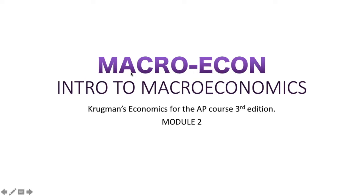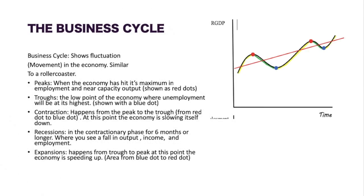The first topic we're going to talk about is the business cycle. We can see here that the business cycle fluctuates — ups and downs — showing how the economy is doing over a period of time. On the horizontal axis you have time, on the vertical axis you would see real GDP. The movement is very similar to that of a roller coaster, and you'll have a red trend line that shows the average of the movement.